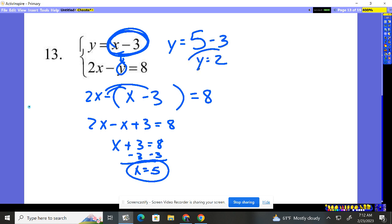So y is equal to 2. So x is 5, y is 2. That's the point where these two lines will cross. There's our intersection point at (5, 2).